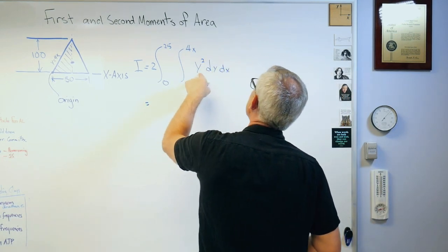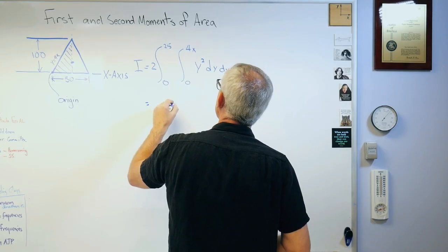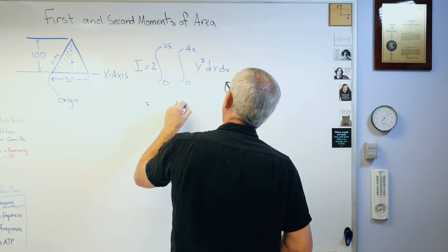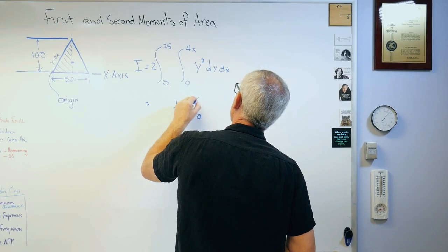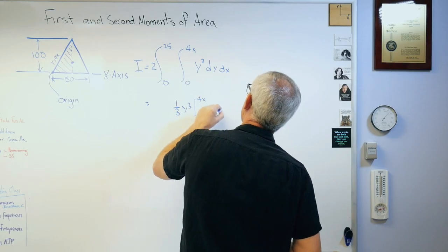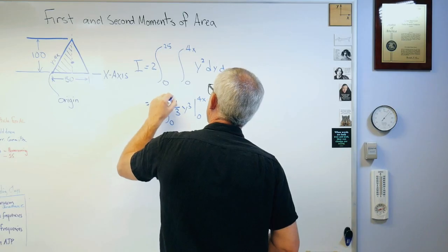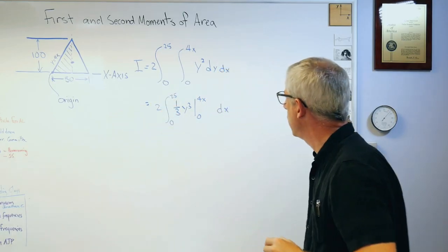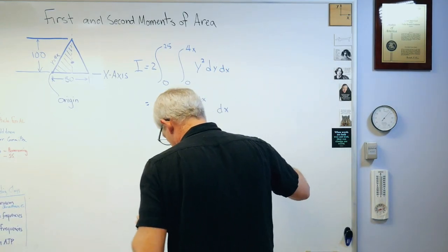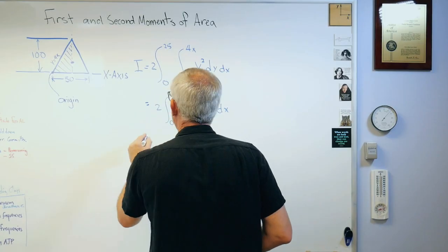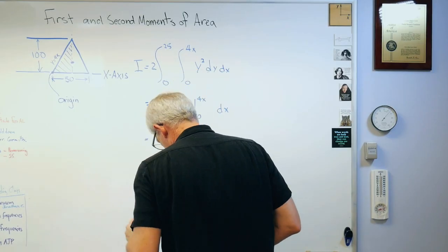And we're going to integrate exactly the same way. What's the integral of y squared? It's going to be one-third y cubed from 0 to 4x dx, from 0 to 25. There you go, there's that.